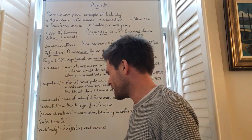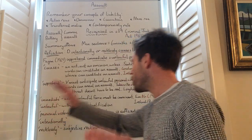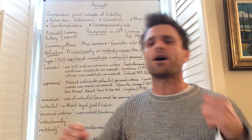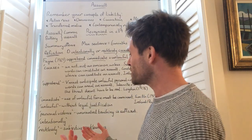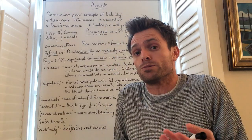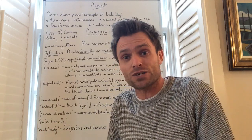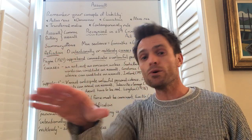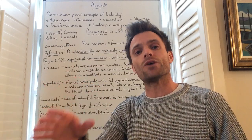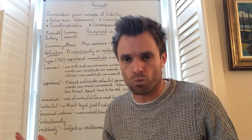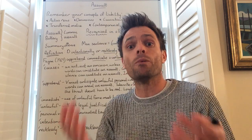The final actus reus element is the use of 'personal violence'. Personal violence is quite a strong term - we often think of someone punching, kicking, or hitting someone with a weapon. And yet personal violence can literally mean unwanted touching. If someone went up to you and you said 'please don't touch me' and they did, then they've committed a battery against you. And that action of them threatening to touch you, or leaning towards you to touch you, would constitute an assault, because you're apprehending the use of immediate and unlawful personal violence. Not that violent, of course, but unwanted touching in its simplest form is enough.